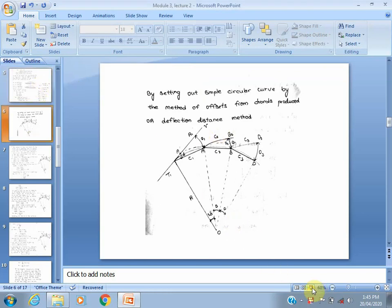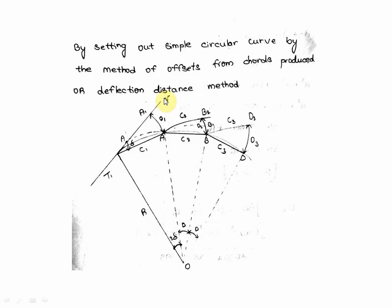This video is on setting out a simple circular curve by the method of offset from chord produced, also called the deflection distance method. In the last session we discussed offset from long chord. In this method, the chord is produced to set out points on the curve, unlike the long chord method where points were located directly from the long chord.